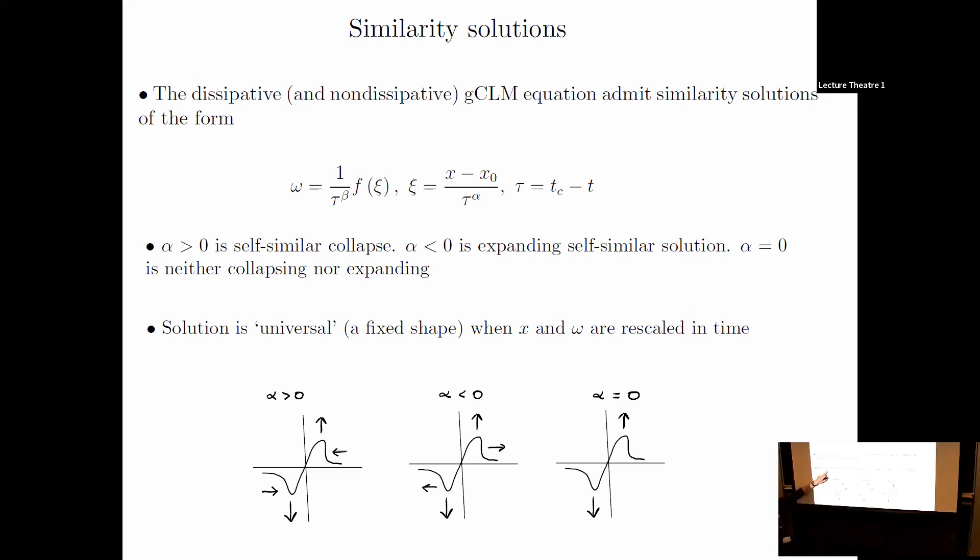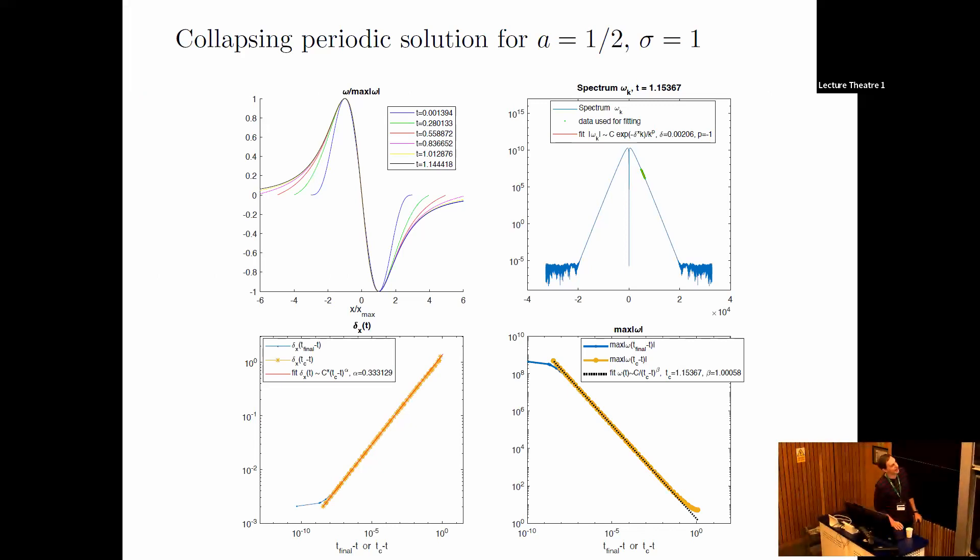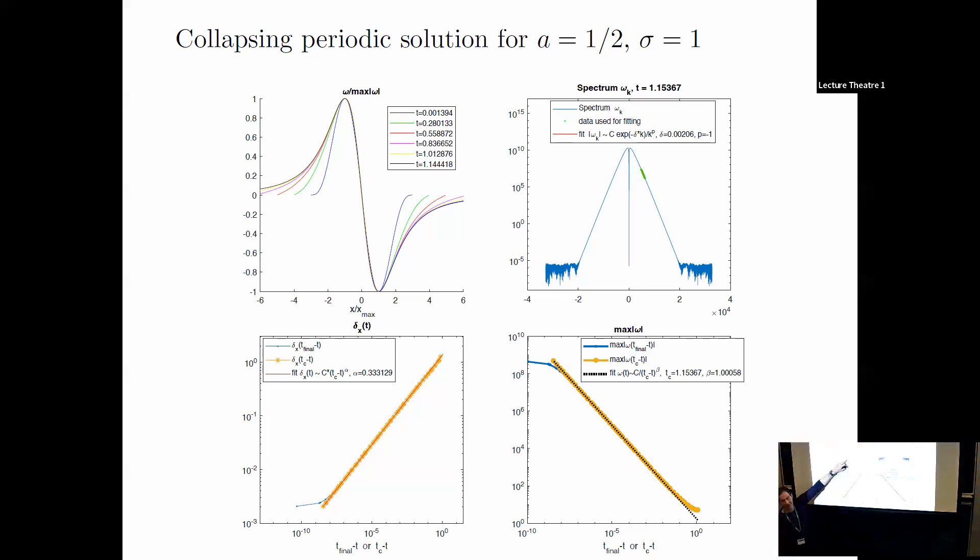The solution is universal—a fixed shape when you rescale omega and x by time. I'm talking about this F here. This is an example of our numerics for a equals one-half and sigma equals one, with some dissipation. This is the rescaled solution, plotting F in time. You can see this is a local similarity solution. It approaches the F, the black line, in time. This is a local self-similar solution.